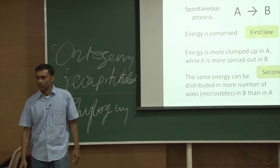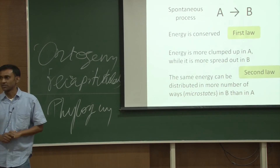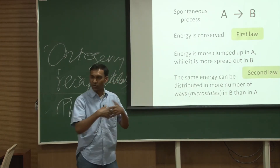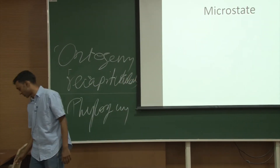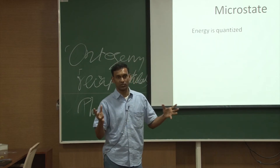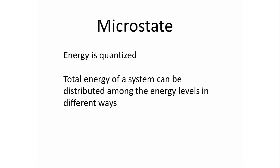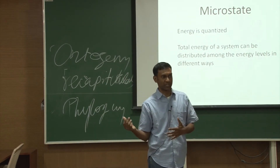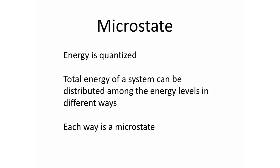This is really the content of the second law of thermodynamics, which tells you why change happens, why transformation happens. So let us examine what microstates means, because that can give us an idea about why there are more microstates in B and less in A, and therefore the system moves in one direction. To define a microstate, the first assumption is that energy is quantized. The second thing is that the total energy — a macroscopic property — can be distributed in different ways, and each such way of distributing energy is what we call a microstate.